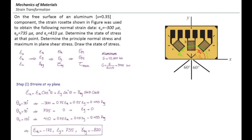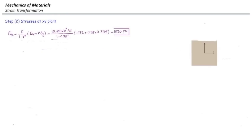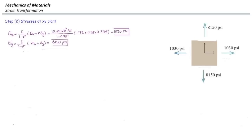We have determined strains at that point. The next step is to determine stresses. To do that we use the generalized Hooke's law for the 2D plane stress case, since we applied the strain gauge on the surface of an element. Plugging in E, ν, εx, εy, and γxy into the plane stress equations gives: σx = 1,030 psi, σy = 8,150 psi, and τxy = −3,220 psi. This is the state of stress at that point, but it is not the final answer — we need the principal stresses.